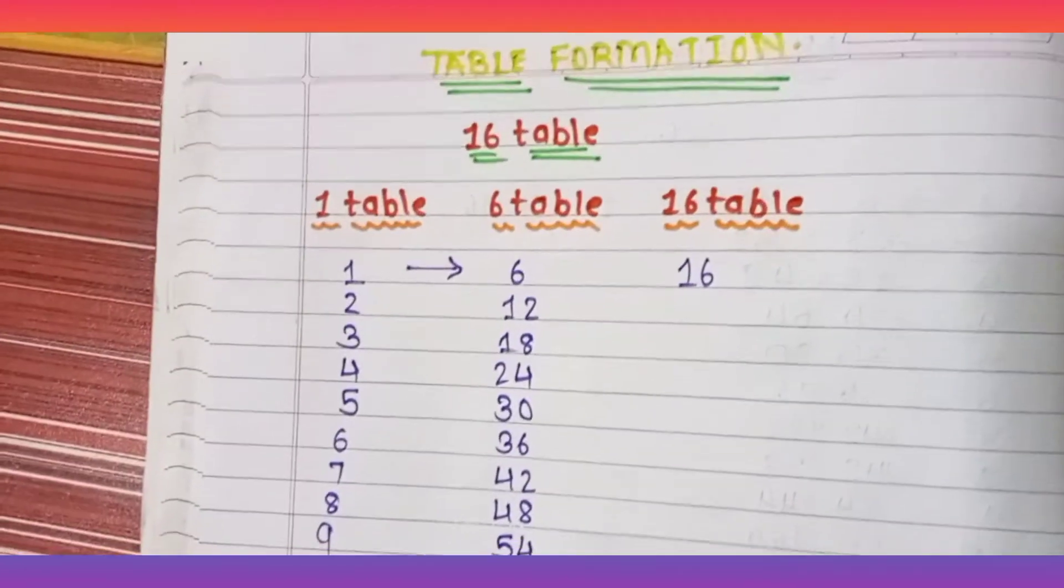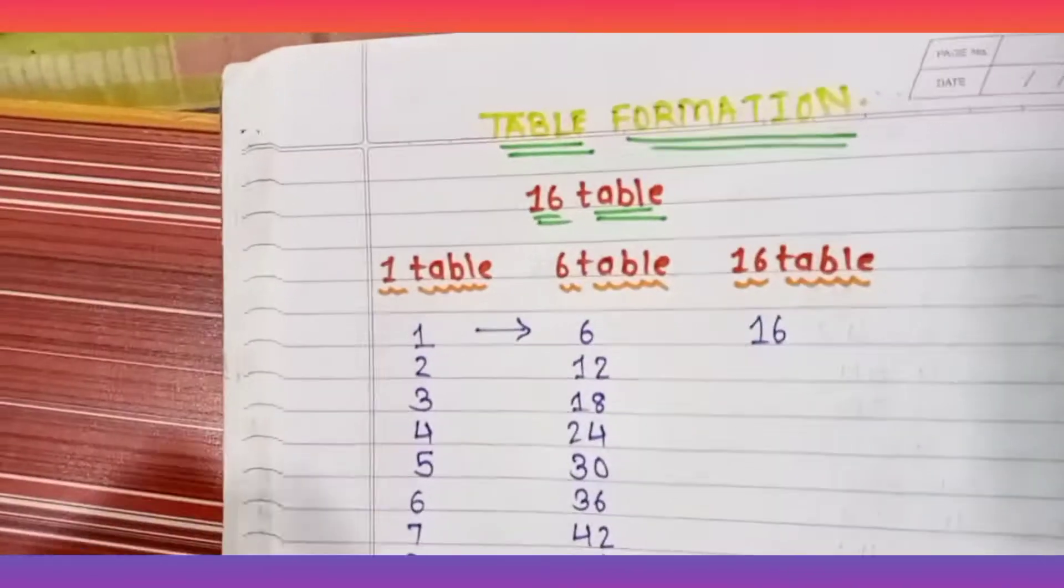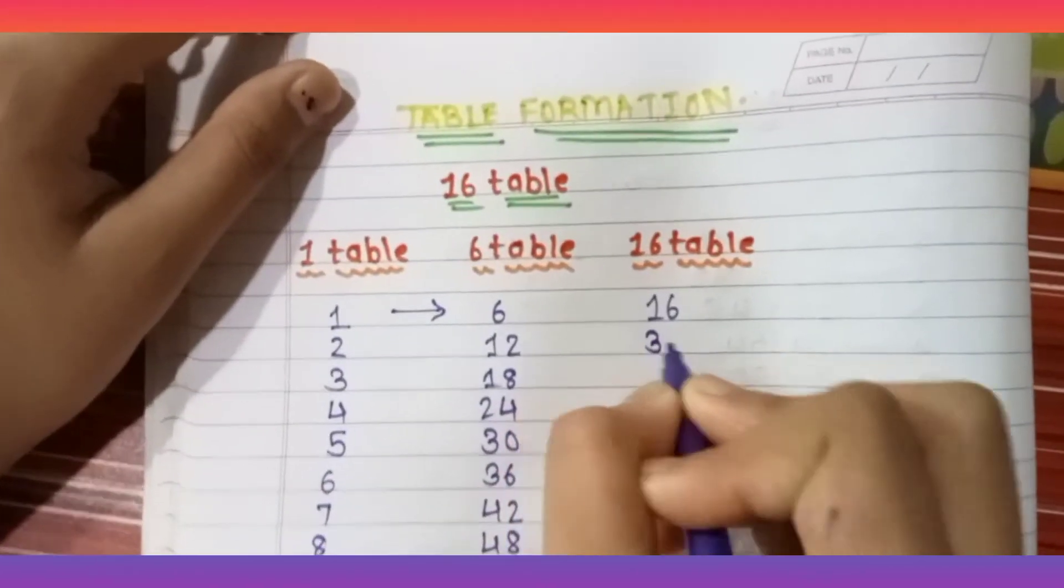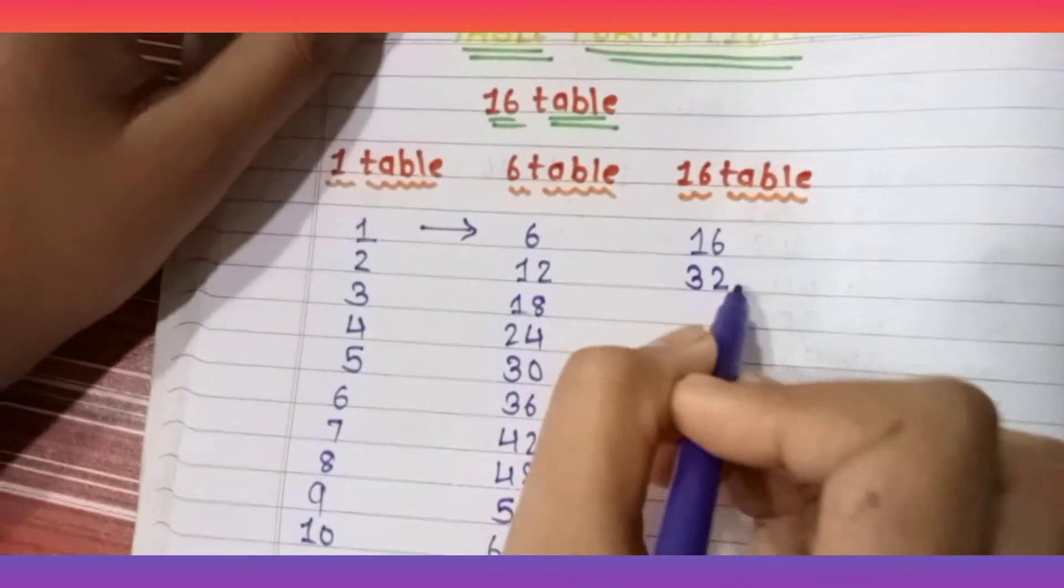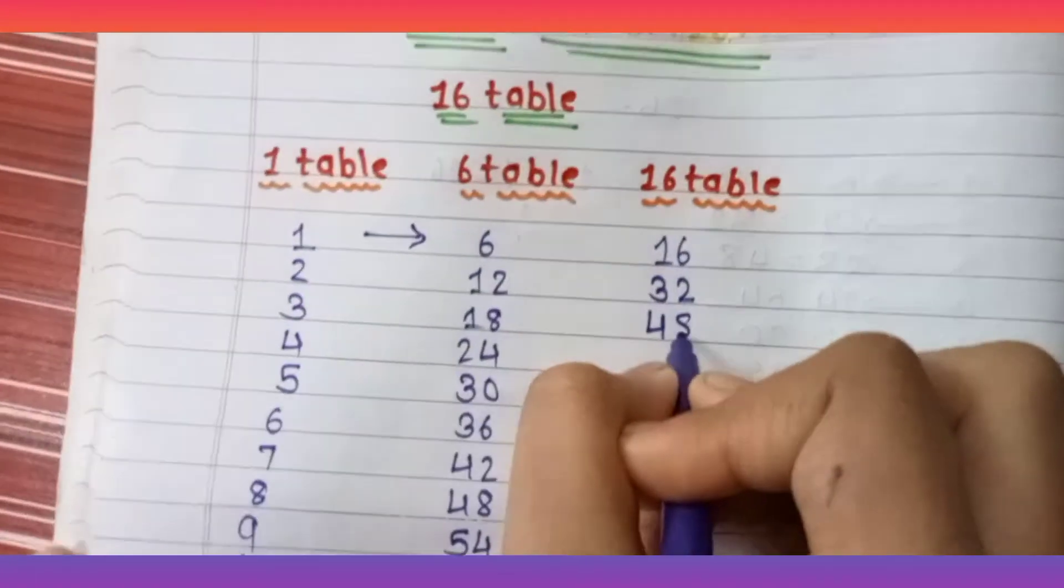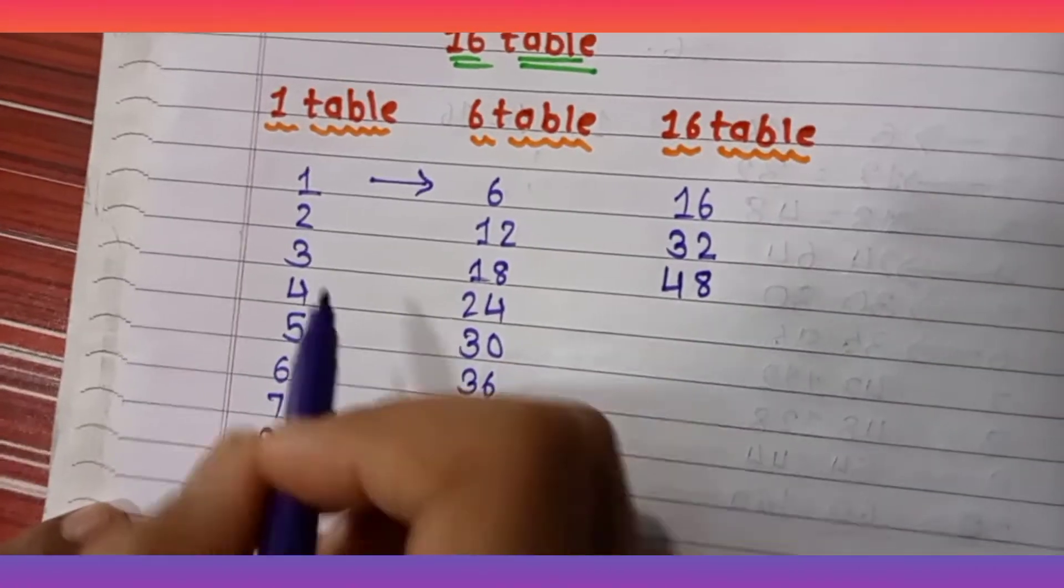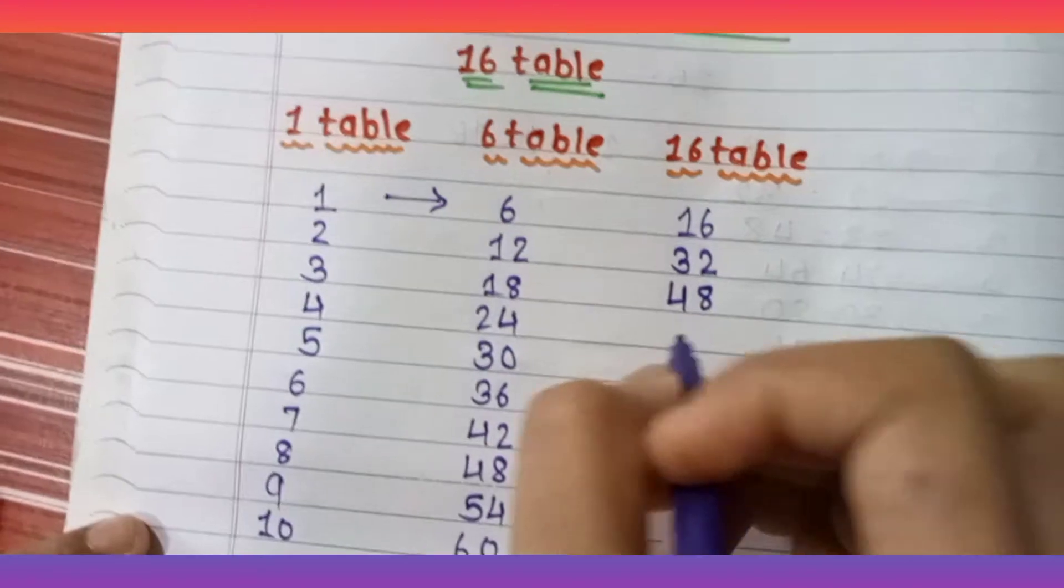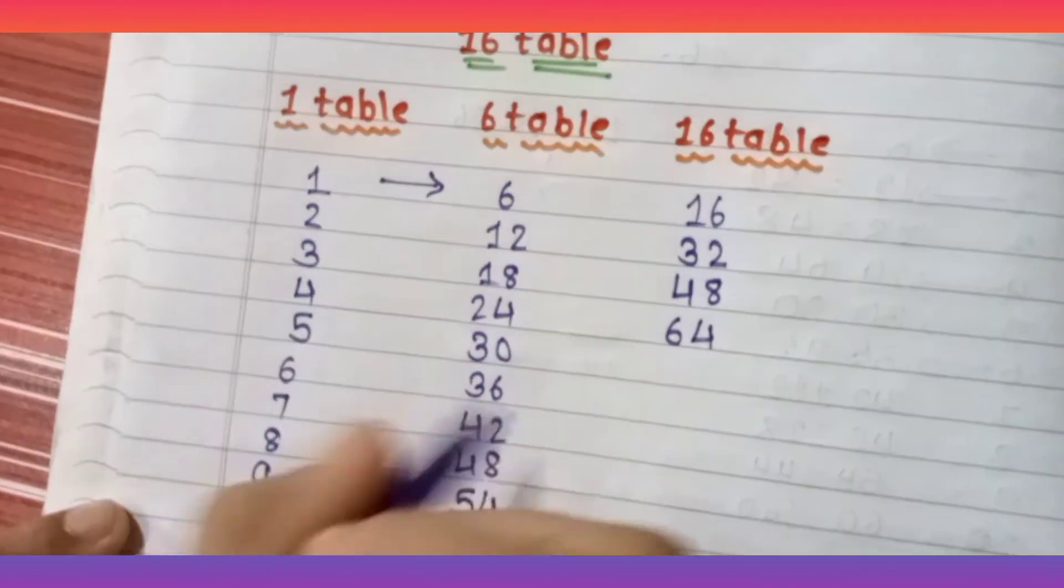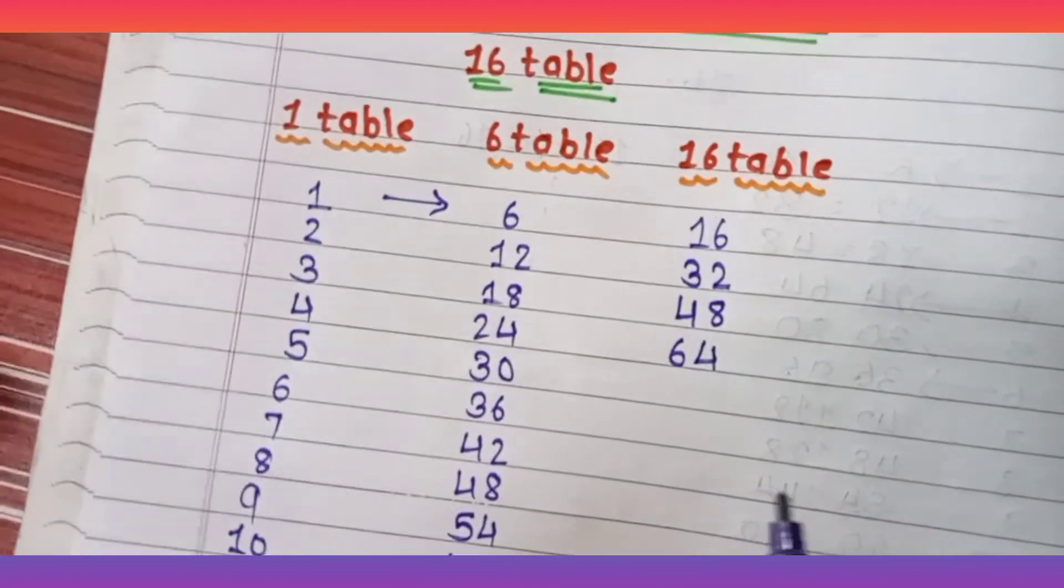2 plus 1 is 3, and the unit place number is like this: 3 plus 1 is 4. The unit place number as it is. 4 plus 2 is 6, and unit place number as it is.